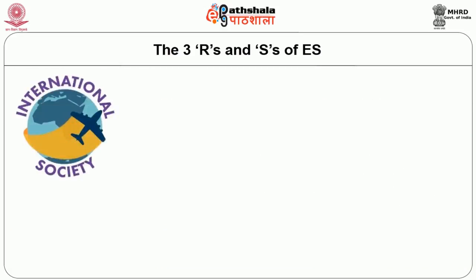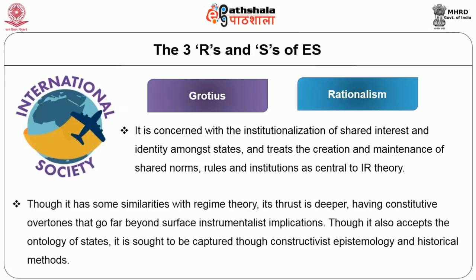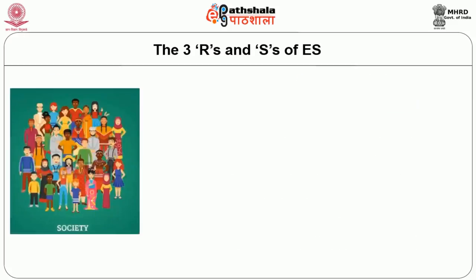International society — mainly the focus of the English school and linked with Grotius and rationalism — is concerned with the institutionalization of shared interest and identity among states, and treats the creation and maintenance of shared norms, rules and institutions as central to IR theory. Though it has some similarities with regime theory, its thrust is deeper, having constitutive overtones that go far beyond surface instrumentalist implications. Though it also accepts the ontology of states, it is sought to be captured through constructivist epistemology and historical methods.